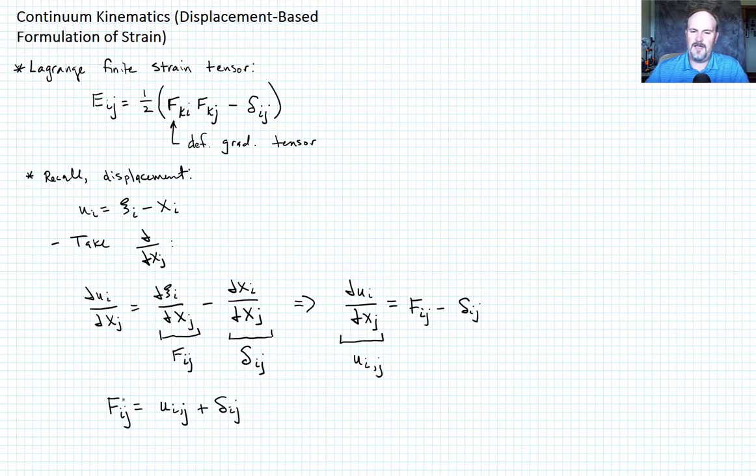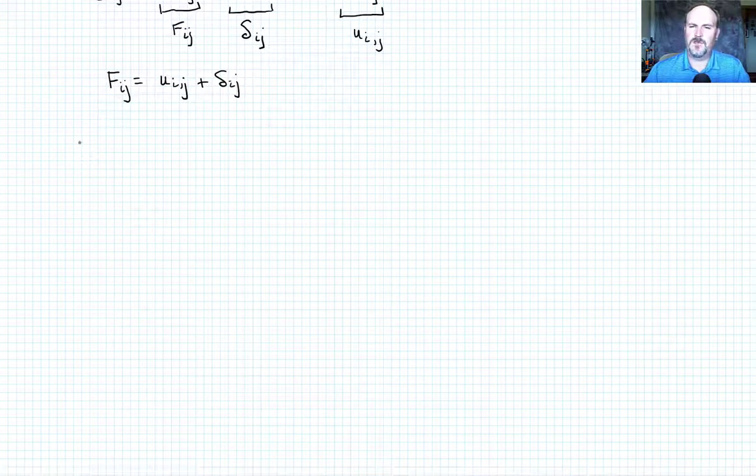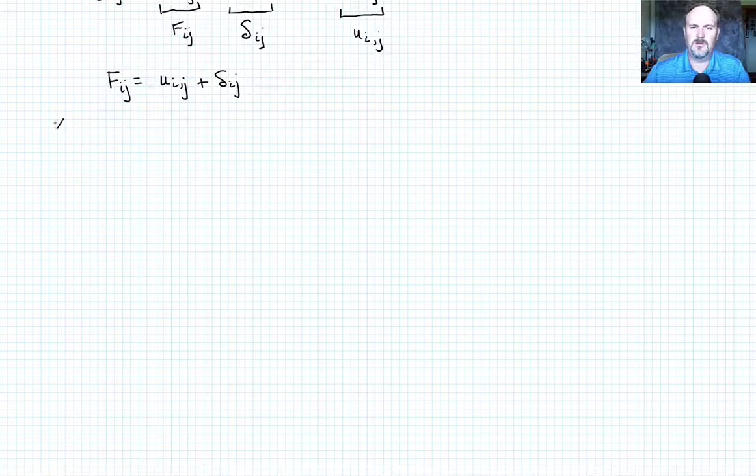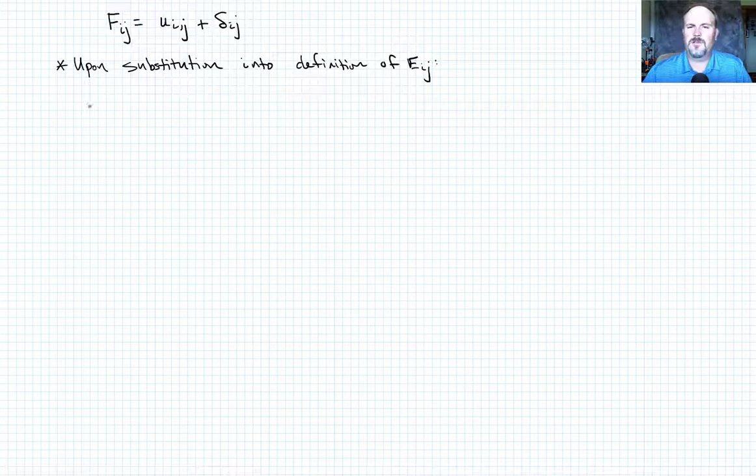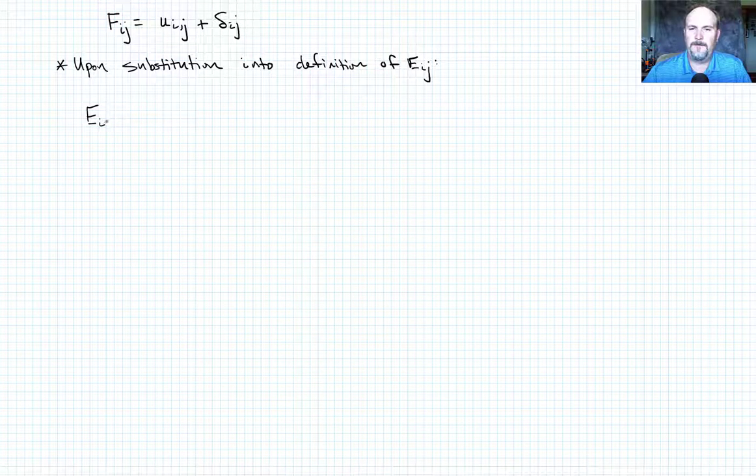So now I have F_ij in terms of a displacement quantity that I can go back and substitute into this equation for the Lagrange finite strain tensor. So when we do that, we now can write the Lagrange finite strain tensor using the displacements. So upon substitution into the definition of E_ij, we'll write that as E_ij is going to be equal to one half.